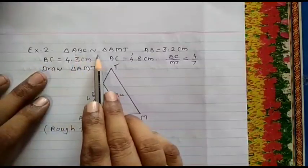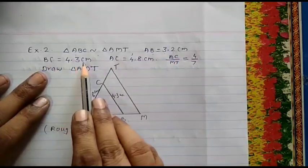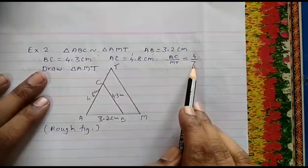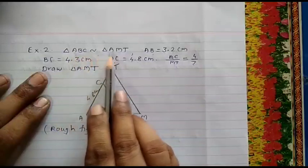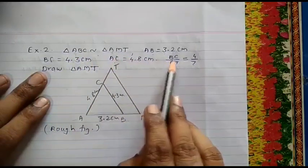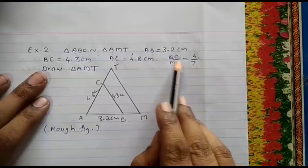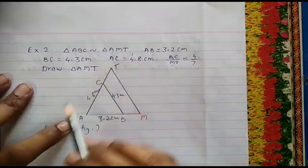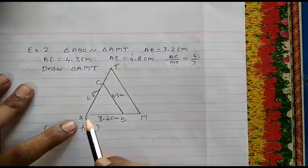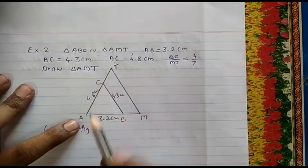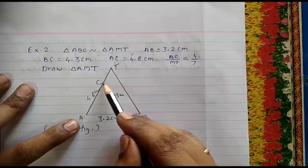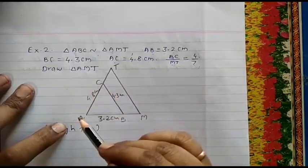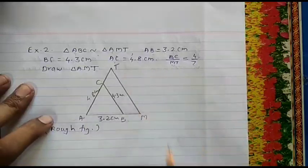Example 2: Triangle ABC is similar to triangle AMT. AB is 3.2 cm, BC is 4.3 cm, AC is 4.8 cm, and BC upon MT is 4 upon 7. Here vertex A is common. BC is a multiple of 4, MT is a multiple of 7, so triangle ABC is the smaller triangle and triangle AMT is the larger triangle.